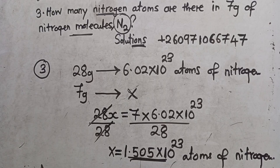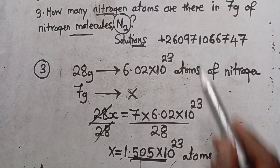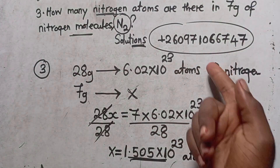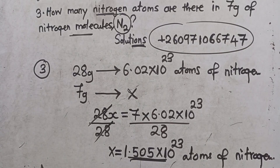So this is the answer — 1.505 times 10 to the power 23 atoms of nitrogen. This is how you get to calculate a given question. This is where we are going to end. For those of you under my online lessons, let's prepare for a wonderful test — I just test you on these things. New and old members, those of you that want to join, this is the number. WhatsApp me. The test starts at 20:00 hours exactly. Thank you so much, have a wonderful day and wish you all the best.